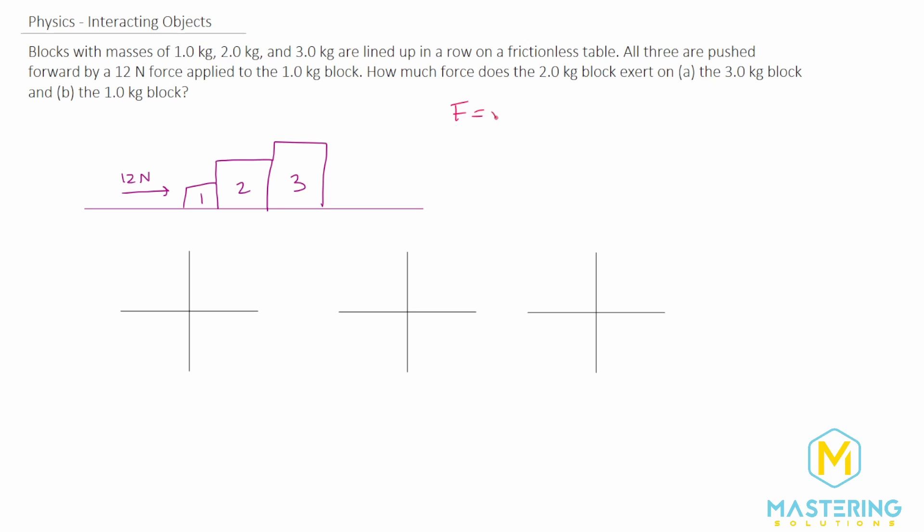So we'll use the force equation, force is equal to ma, and we'll divide both sides by the mass to isolate the acceleration. So acceleration is equal to force divided by the mass. Now we know that the force is 12 newtons. So we have 12 newtons divided by the total mass because they're all connected as one big unit as they're sliding across this frictionless table. So we have 1 kg plus 2 kg plus 3 kg. So 6 total. And so 12 divided by 6 is going to be 2 meters per second squared. So now we have the acceleration for the blocks.